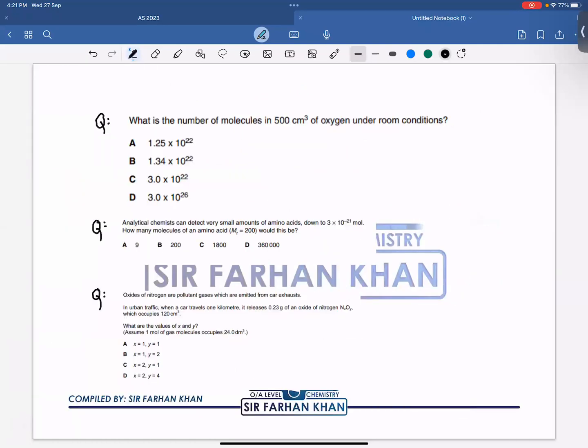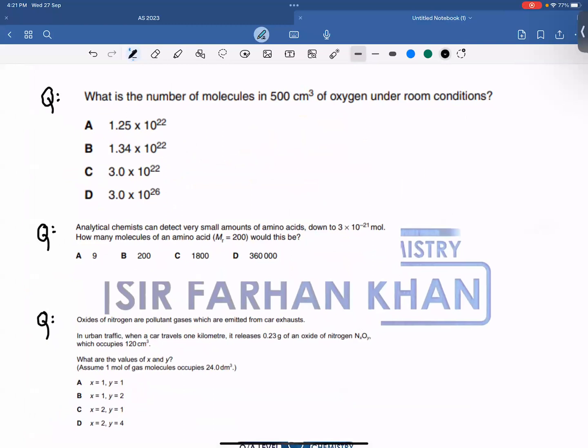On the basis of this entire topic, let's do some questions. The questions are extremely easy. What is the number of molecules in 500 cm³ of oxygen under room condition? First of all, you have room condition. And room condition is room temperature and pressure. And the other thing you have to do is the examiner has a volume of oxygen gas.